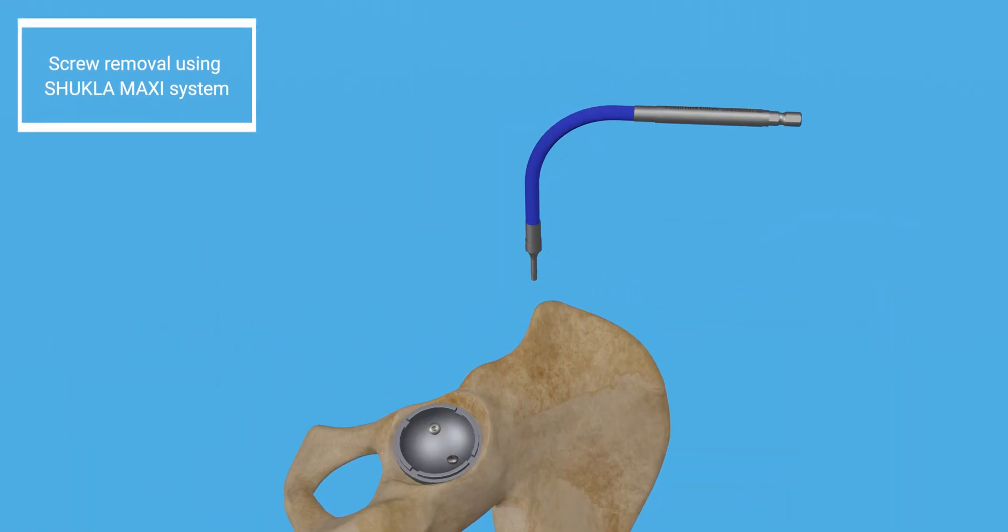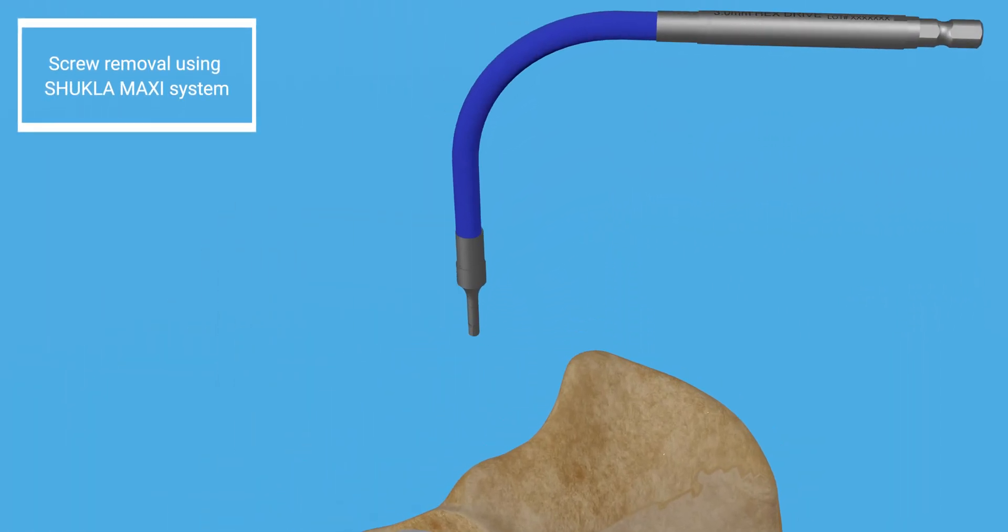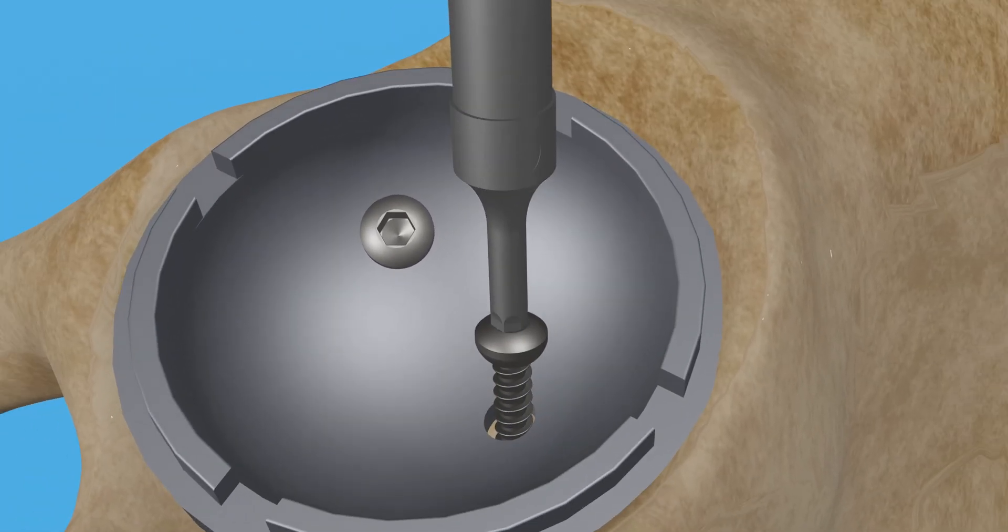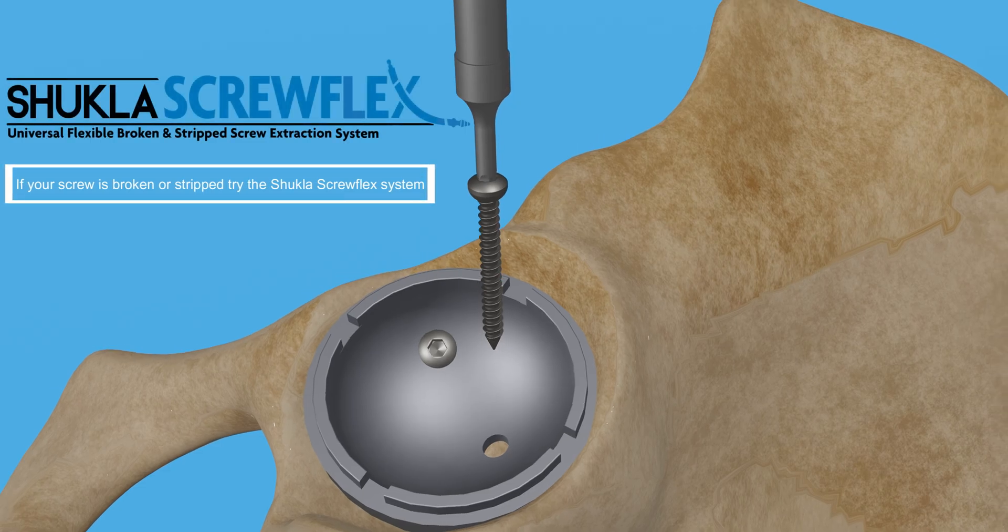Examine X-ray for cup screws. If screws are present, remove the poly and use the Shukla Maxi system to remove the screws. If the screws are broken or stripped, use the Shukla Screwflex system with flexible drivers for screw access.